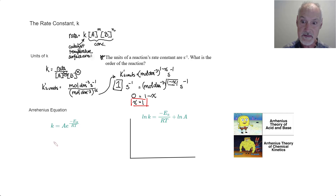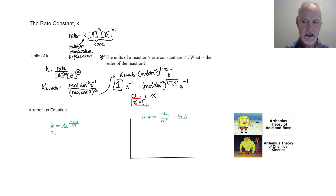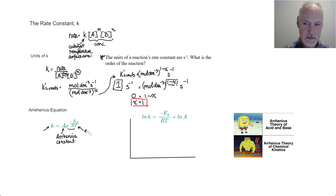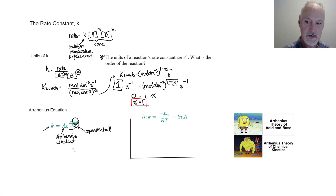Svante Arrhenius did work on both acids and bases and on reaction kinetics. He found there was an exponential relationship between the rate constant and the inverse of temperature, and went on to develop the Arrhenius equation found in our IB data booklet. Here we have the rate constant k, A is sometimes referred to as the Arrhenius constant, and the exponential portion of the expression shows the effects of temperature and even a catalyst, since adding a catalyst would change the activation energy Ea.